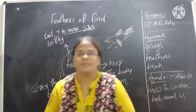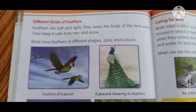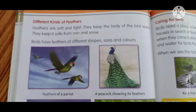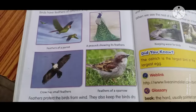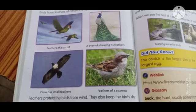Now open your textbook, page number 90. Different kinds of feathers: feathers are soft and light. They keep the body of the bird warm. They keep it safe from rain and snow. Birds have feathers of different shape, size, and colors. You can see the pictures here — feathers of a parrot, which is different from a peacock showing its feathers. Crow has small feathers. Feathers of a sparrow. We can see different types of shapes, sizes, and colors of feathers. Feathers protect the birds from wind. They also keep the birds dry. Complete the volume also, children.